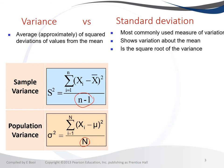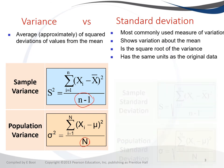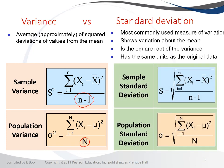The standard deviation is the square root of the variance. Because we take the square root, it goes back to the same units as the original data, which is why we can interpret it. For the sample standard deviation, s equals the square root of the sum of your observations minus the mean, squared, divided by n minus one.